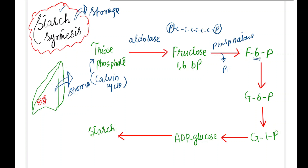Fructose-6-phosphate, where carbon number 1 has no phosphate — only position 6 has phosphate — converts into glucose-6-phosphate. We know that fructose is a keto sugar and glucose is an aldose sugar. To convert keto to aldo form, the structure is changed. The molecular formula stays the same, so the enzyme used here is called isomerase. Then glucose-6-phosphate converts to glucose-1-phosphate, where only the position of the phosphate changes, so the enzyme used is mutase.